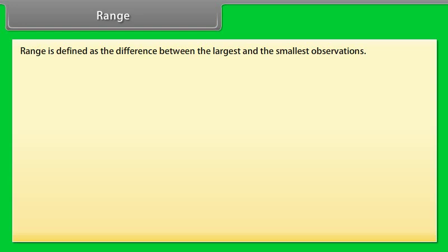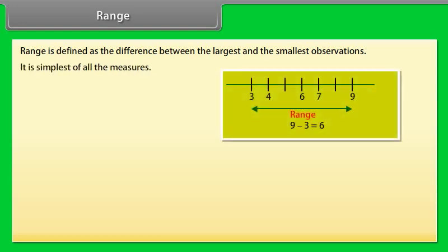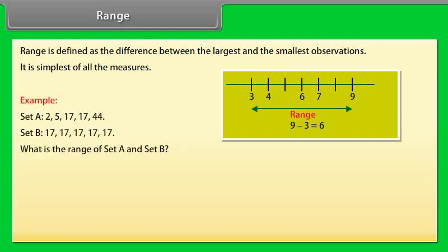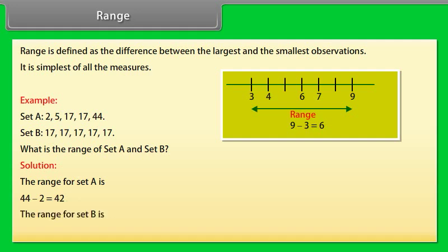Range is defined as the difference between the largest and the smallest observations. It is the simplest of all the measures. For example, the range for set A is 44 minus 2, which is equal to 42. And the range for set B is 17 minus 17, which is equal to 0.